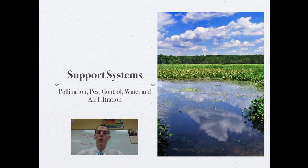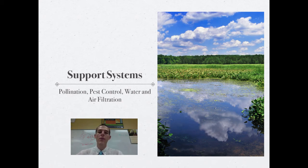the global crop production and food production would be significantly lower. We wouldn't have nearly as much food around if we did not have those insects and animals pollinating our plants for us, so they are supporting our agriculture.